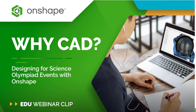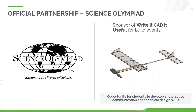We're really excited to have this partnership with Science Olympiad. We specifically sponsor the Write It CADD event, which of course uses CAD, and Onshape is a great fit for it. But we're also happy to suggest using Onshape for a number of other build events — any where you might need to 3D print something, laser cut something, or just design in CAD first to make sure it might work before building it. Onshape can be a really useful tool, especially because it can help students develop and practice those communication and technical design skills.